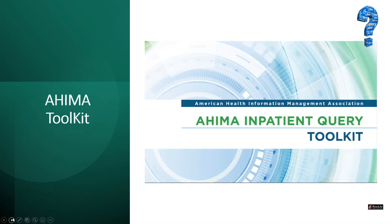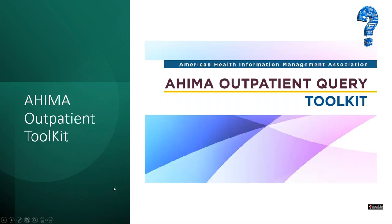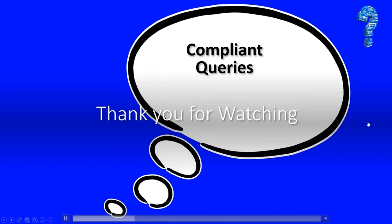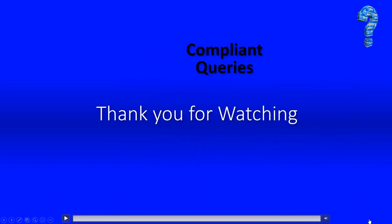To summarize how to query: it must be clear and concise, contain clinical indicators from the health record, present only the facts identifying why clarification is required, be compliant, and never discuss the impact on reimbursement. For inpatient, use the inpatient compliant query toolkit; for outpatient, use the outpatient toolkit — both available to AHIMA members. Thank you for watching this exclusive presentation in partnership with AAPC. Until next time.